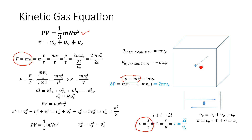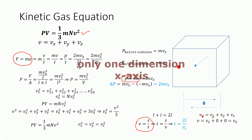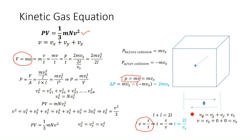Now consider this cube — inside this cube there's a particle that can move in any direction. The velocity of this particle in three-dimensional space is v = vx + vy + vz. This makes the problem more complicated, so let's simplify and work in only two dimensions. Consider the left side and right side of the container along the x-axis only.